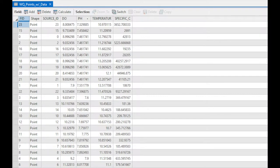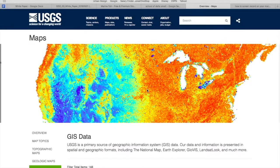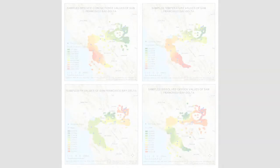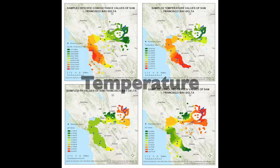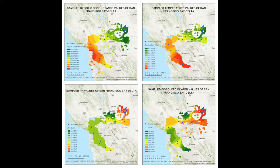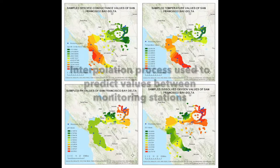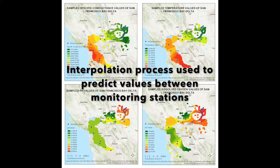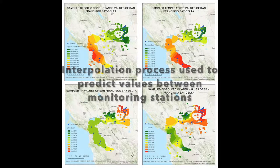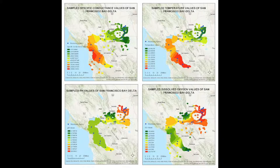To begin our analysis, we analyzed water quality data collected in the San Francisco Bay Delta. Using sample point measurements collected through the US Geological Survey, we created maps of dissolved oxygen levels, temperature, pH, and specific conductance. The interpolation process took data measured at specific locations and predicted the value of the dataset at every location between the measurements, because it is not practical to collect data at every possible point.